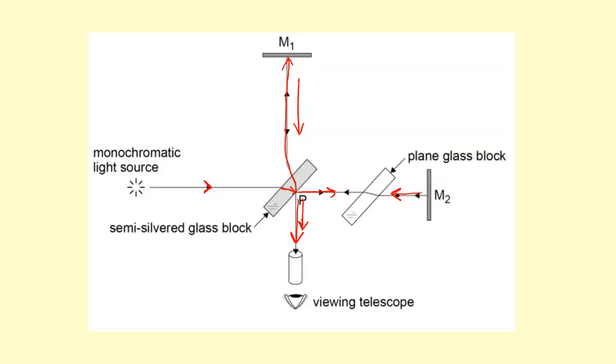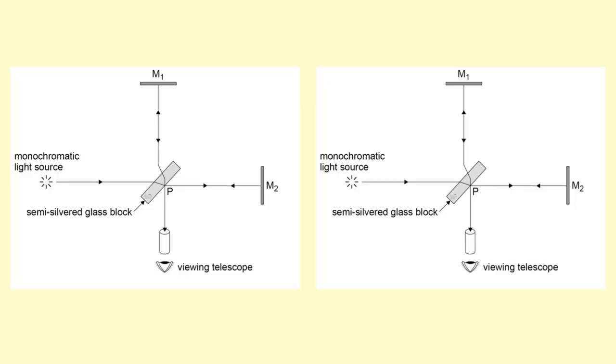Let me show you why we need the plain glass block. If we take a look at this ray, firstly it goes through the glass. Once it gets reflected, it goes through again. It goes all the way to M2, gets reflected back from M2, and it goes through the medium a third time, the semi-silvered glass block, before reaching the telescope. So it's gone through three times.